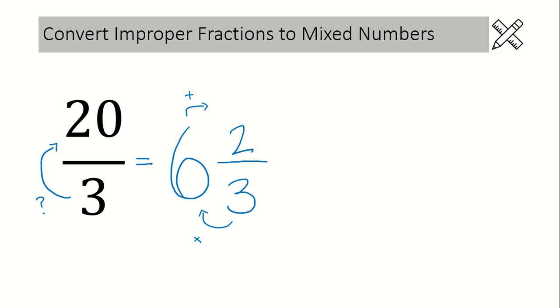If that's a little bit tricky at first, you can use long division to help you. Here's how that works. We have 20 over 3. That is the same as 20 divided by 3. So fractions and division are the same. Have you ever noticed that a division symbol looks like a fraction? And that's because the two are related.